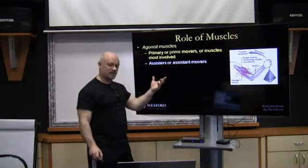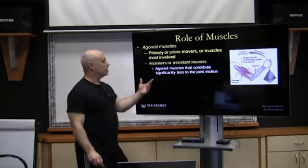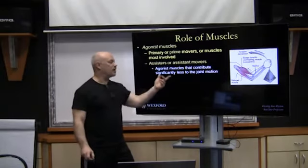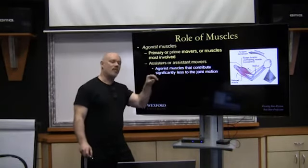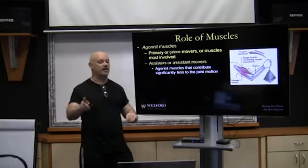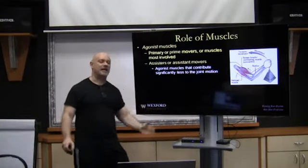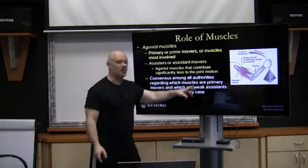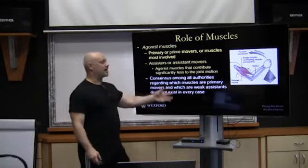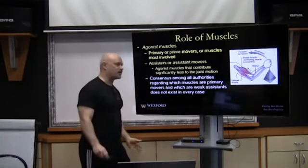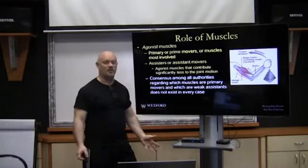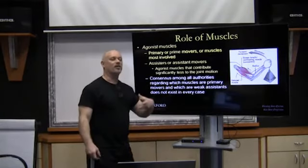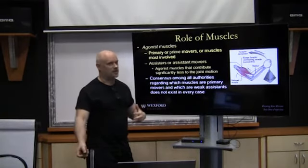Along with primary movers, muscles also have assistant movers. These are agonist muscles that contribute significantly less to the joint action or motion. So you have primary movers, secondary movers, or synergistic helping muscles that help facilitate that movement. The consensus among most authorities regarding which muscles are primary, secondary, weak assisters, or strong assisters depends on who you talk to and what book you read. But in every movement you have a primary mover, a secondary mover, and assisting muscles.